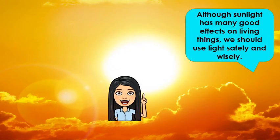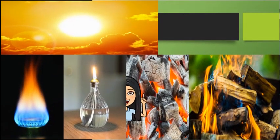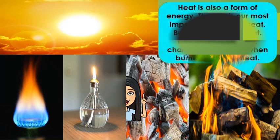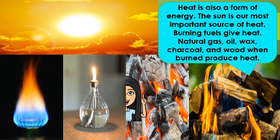Although sunlight has many good effects on living things, we should use light safely and wisely. Heat is also a form of energy. The sun is our most important source of heat. Burning fuels give heat. Natural gas, oil, wax, charcoal, and wood, when burned, produce heat.